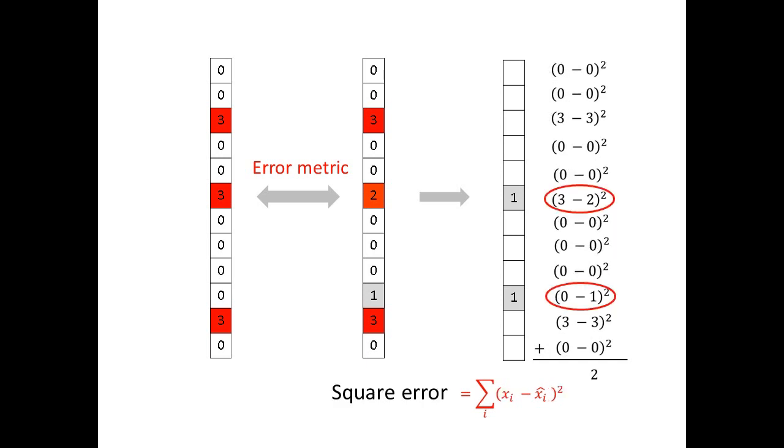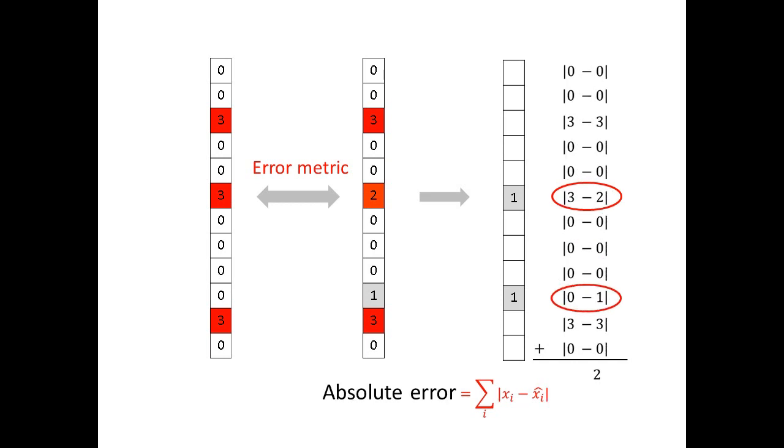As an example, you can consider a square error metric, which is the sum of the squares of the error vector entries. Another popular error metric is absolute error. That's the sum of the absolute values of the entries of the error vector.